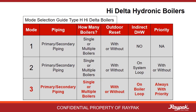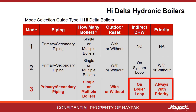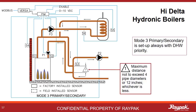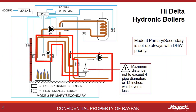Now moving on to the Mode 3 discussion. In Mode 3, the indirect domestic hot water is on the boiler loop. Mode 3 systems are always run with priority. Here is a Mode 3 primary-secondary single boiler system. You have a boiler loop and a system loop, and the indirect domestic hot water heat exchanger is on the boiler loop in this case.